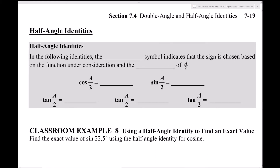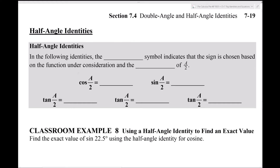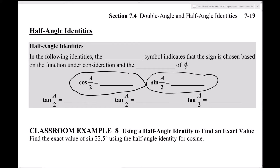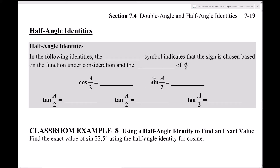Now, half angle identities - these are extremely important and we're definitely going to see them in the homeworks. You'll notice there are three variations for tangent, and that has to do with dividing sines and cosines. We can figure out the sine and cosine half-angle formulas, and then find tangent by dividing those two.